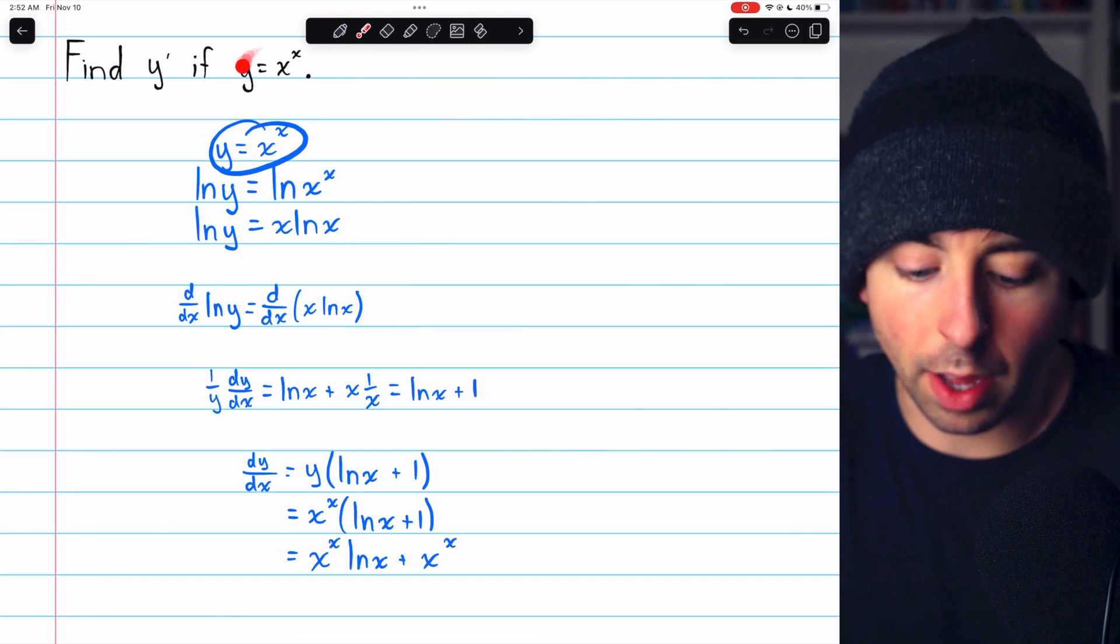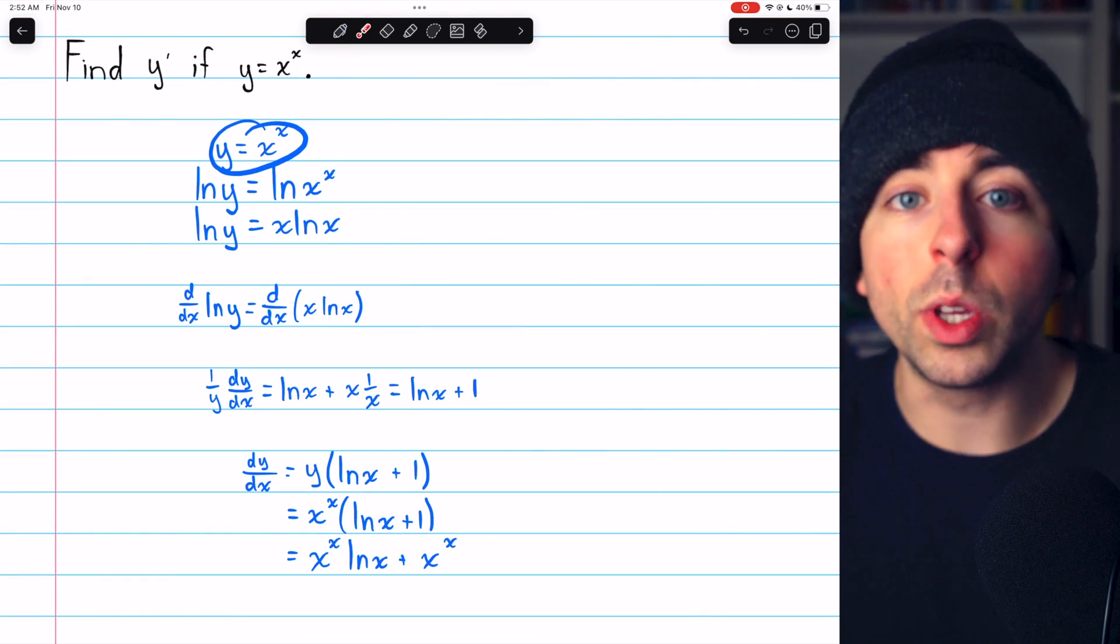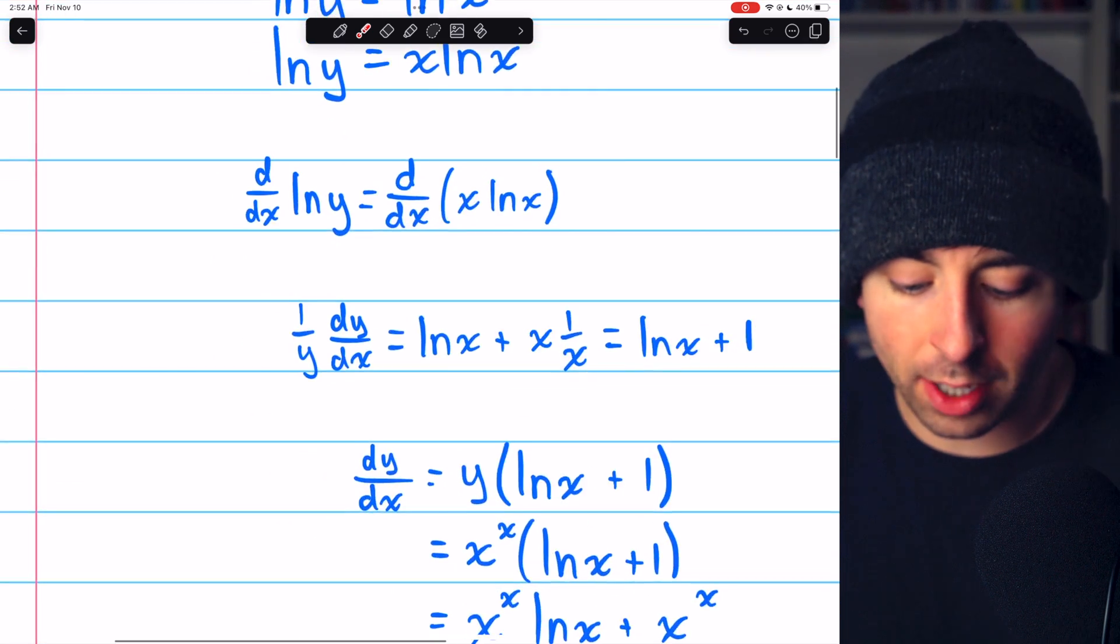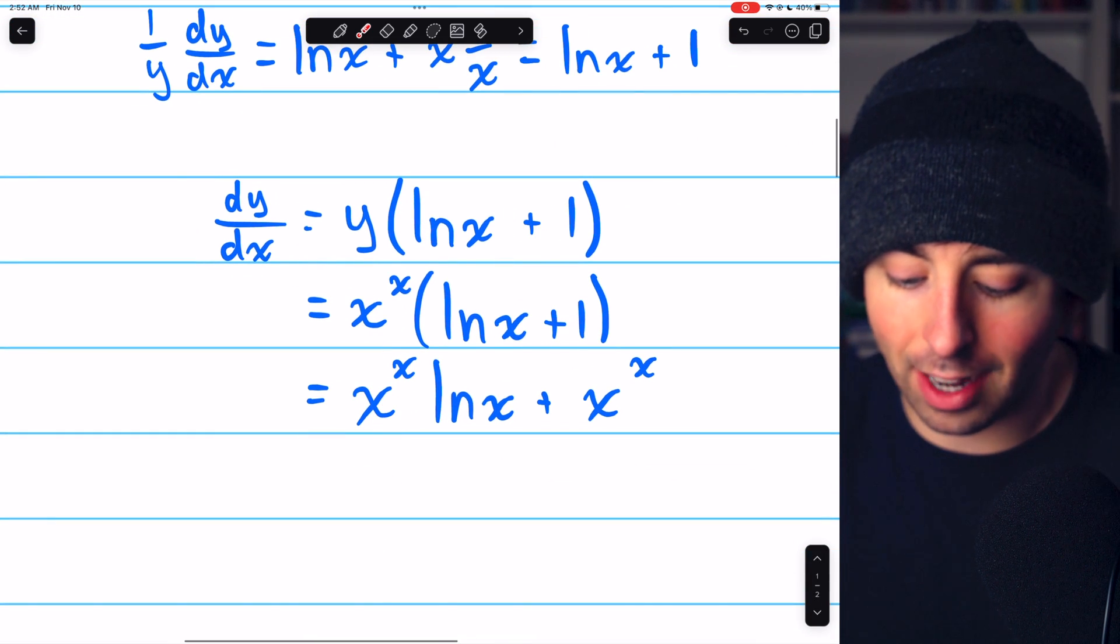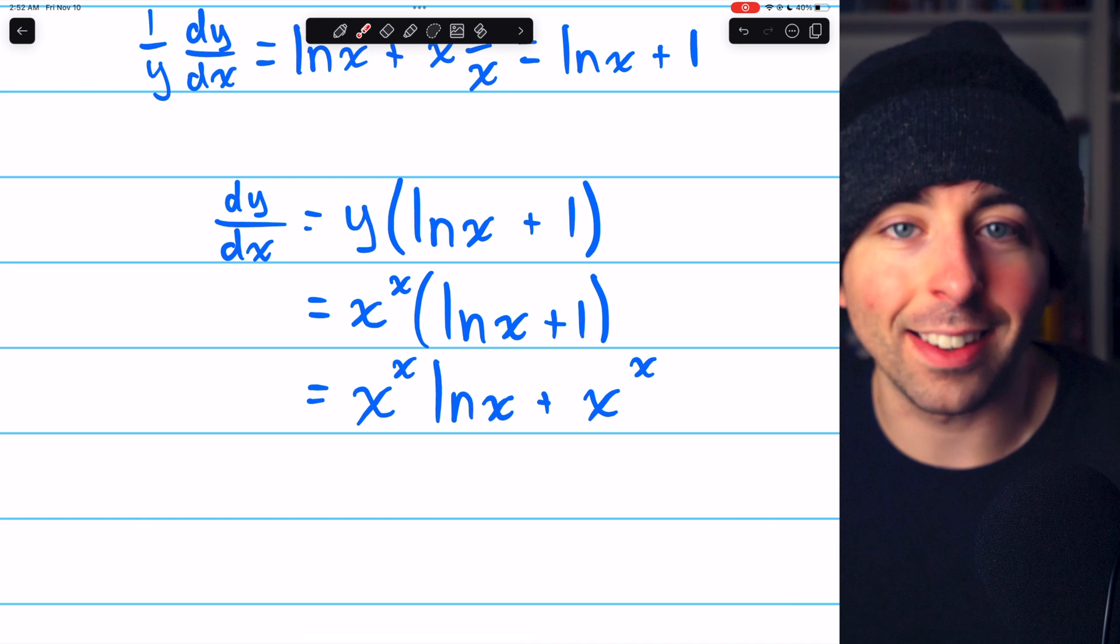And that's how we take the derivative of x to the x. We use logarithmic differentiation and find that the derivative is x to the x times ln x plus x to the x.